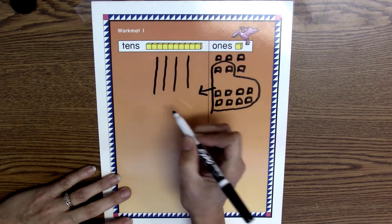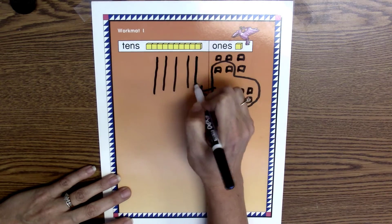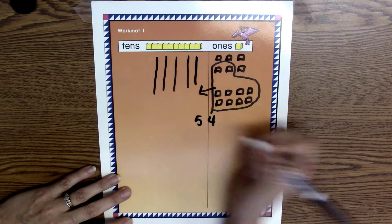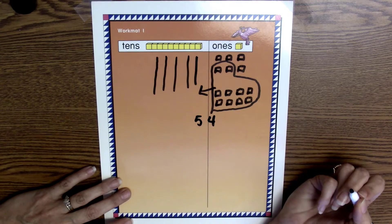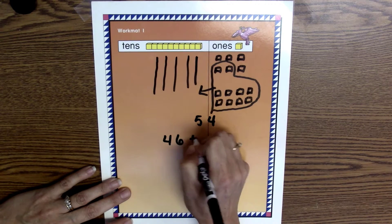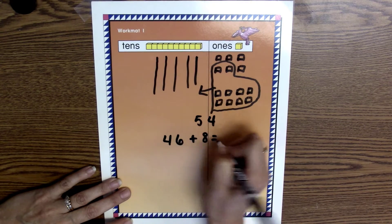Which gives me 5 tens and 4 ones. So I have 5 tens and 4 ones, which equals 54. So if I write an equation, that would be 46 plus 8 equals 54.